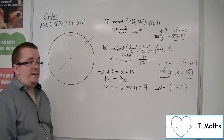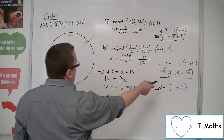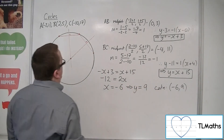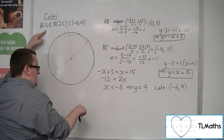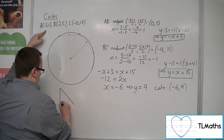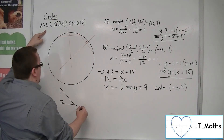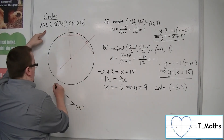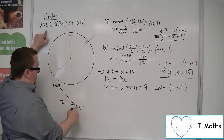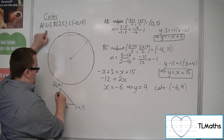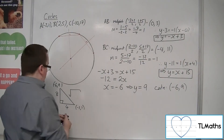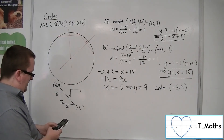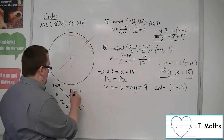Now I just need to find the radius — the distance between that centre and any of those three points. Using (minus 2, 1): that point is to the right and further down than the centre. From minus 6 to minus 2, that's a distance of 4. From 1 to 9, that's a distance of 8. So the radius is the square root of 8 squared plus 4 squared, which is the square root of 80.